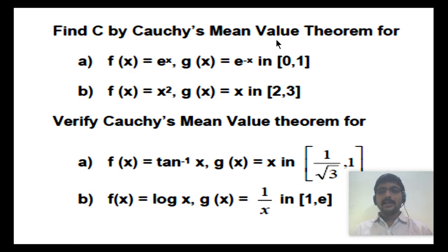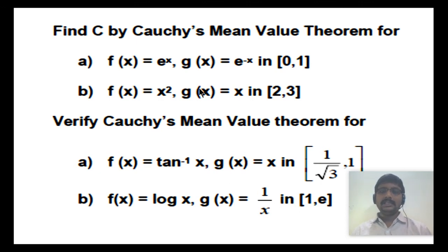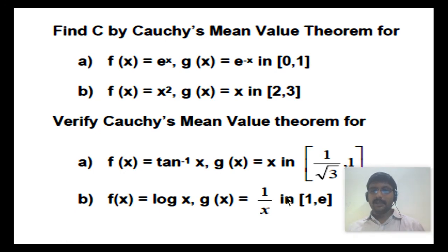Practice problems for students: find the c value using Cauchy's mean value theorem for f(x) = x² and g(x) = x on closed interval [0,1], and verify Cauchy's mean value theorem for the same functions on closed interval [2,3]. Proceed as shown above — if the c value obtained lies in the respective open interval, then Cauchy's mean value theorem is verified; otherwise it is not verified.